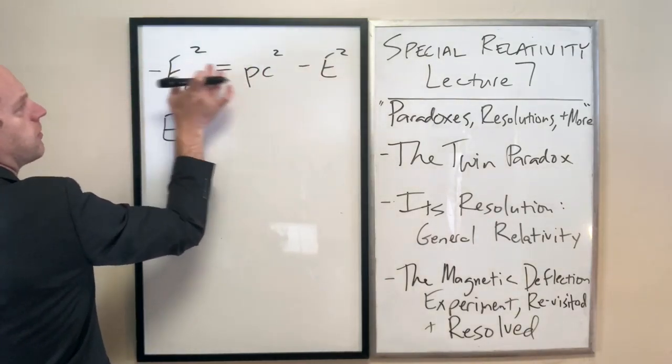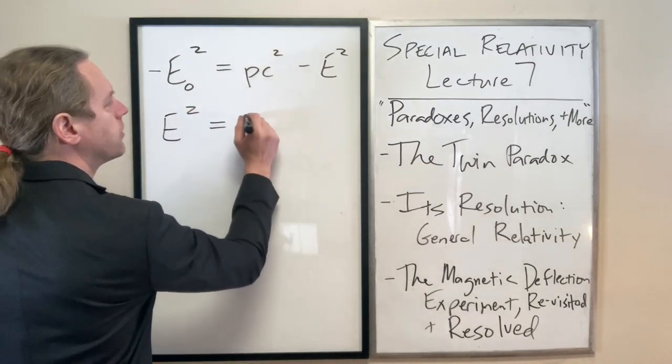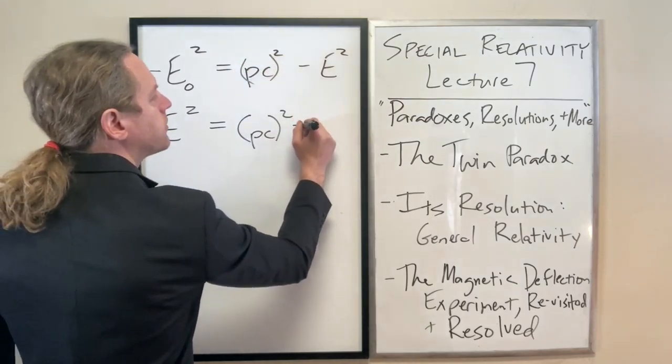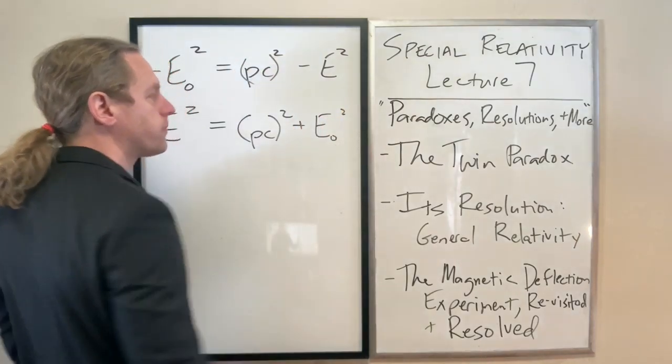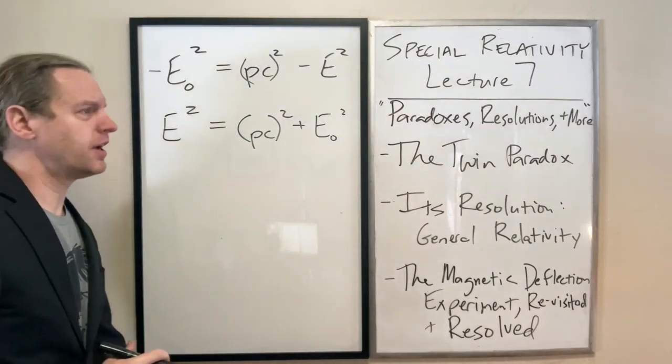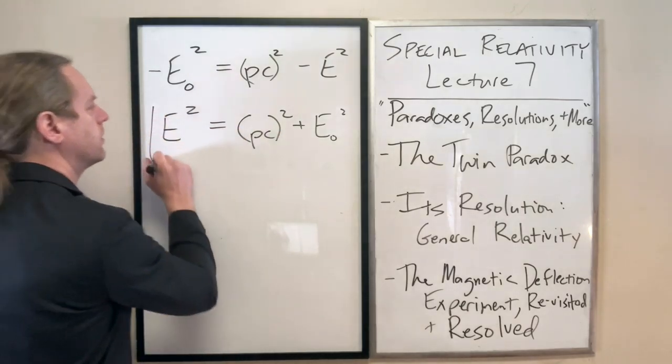The equation ends up looking like this. If you just add each of those to either side, it ends up looking like this. E squared equals PC squared plus E naught squared. I don't want to go any further than this. The book does a little bit, but I did want to make that correction here because this is very important, and we will come back to this.